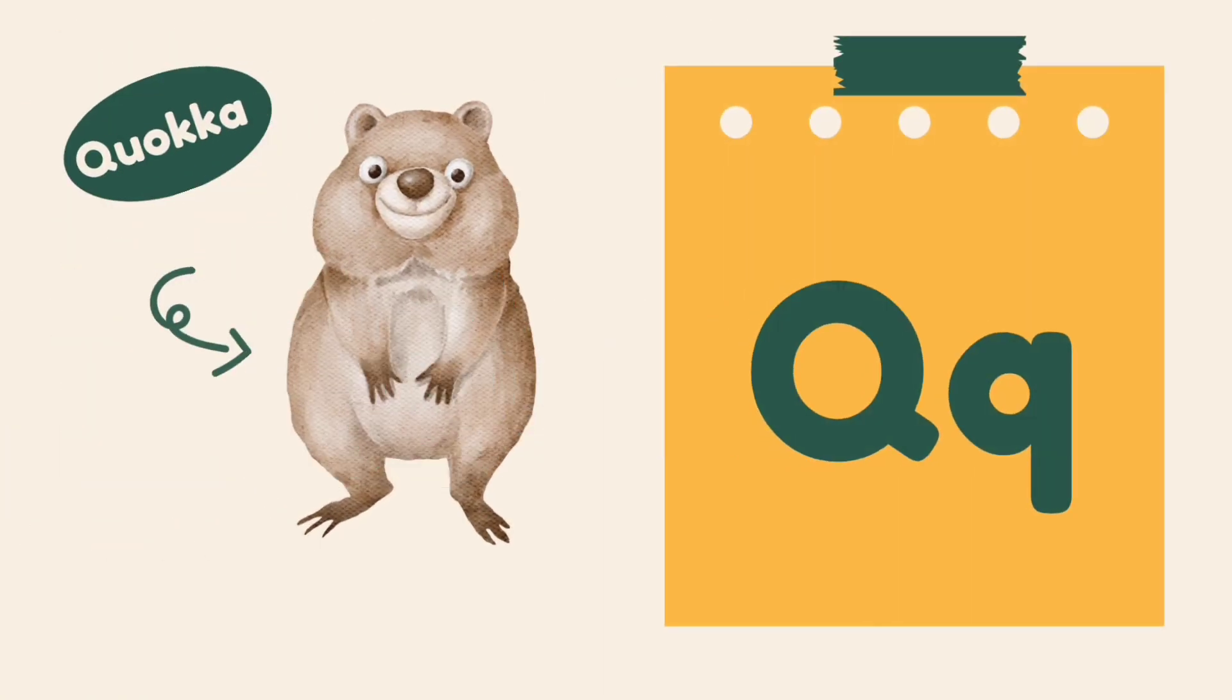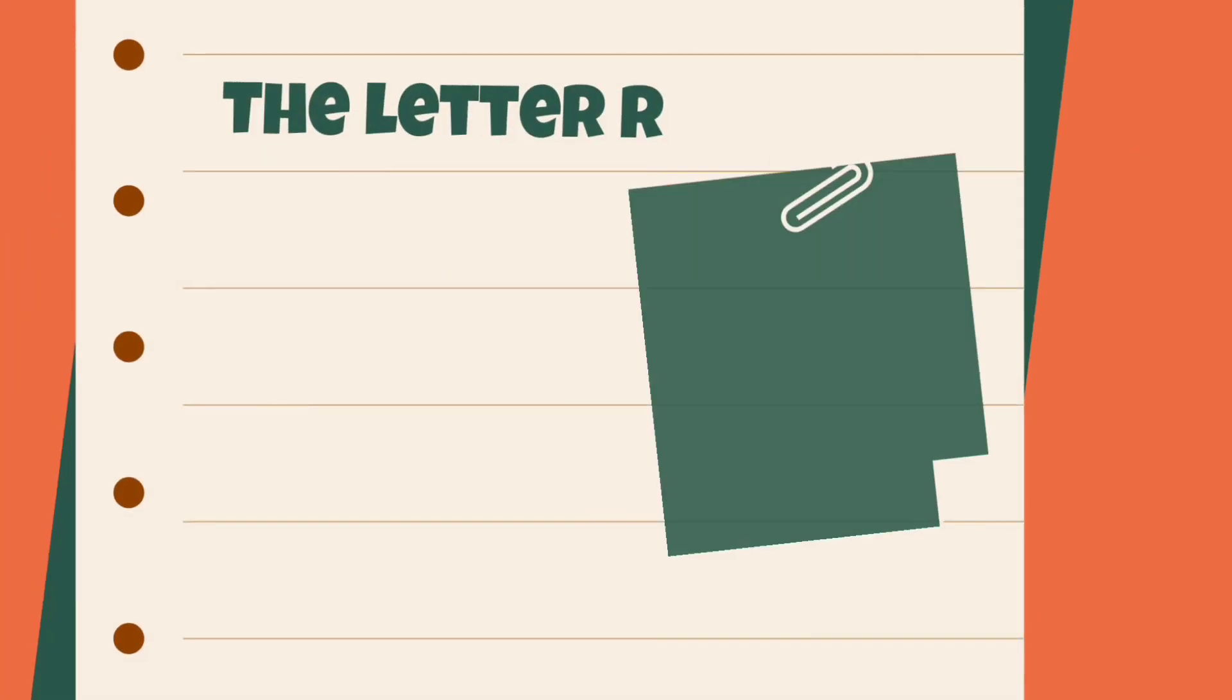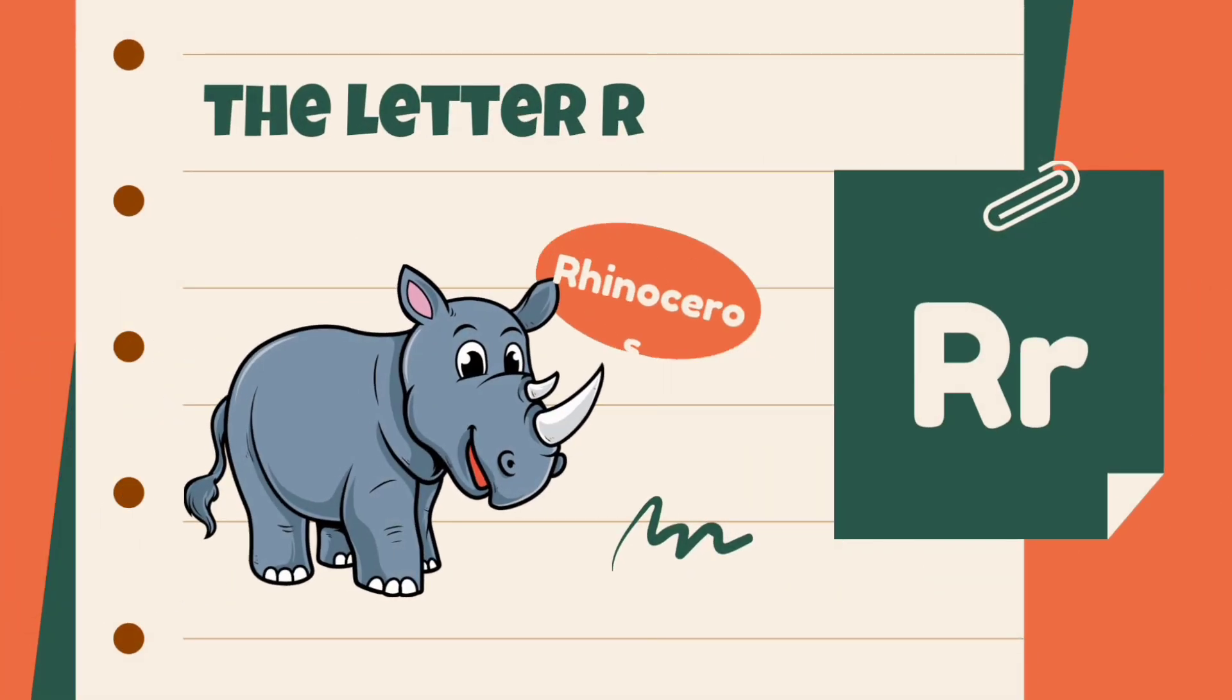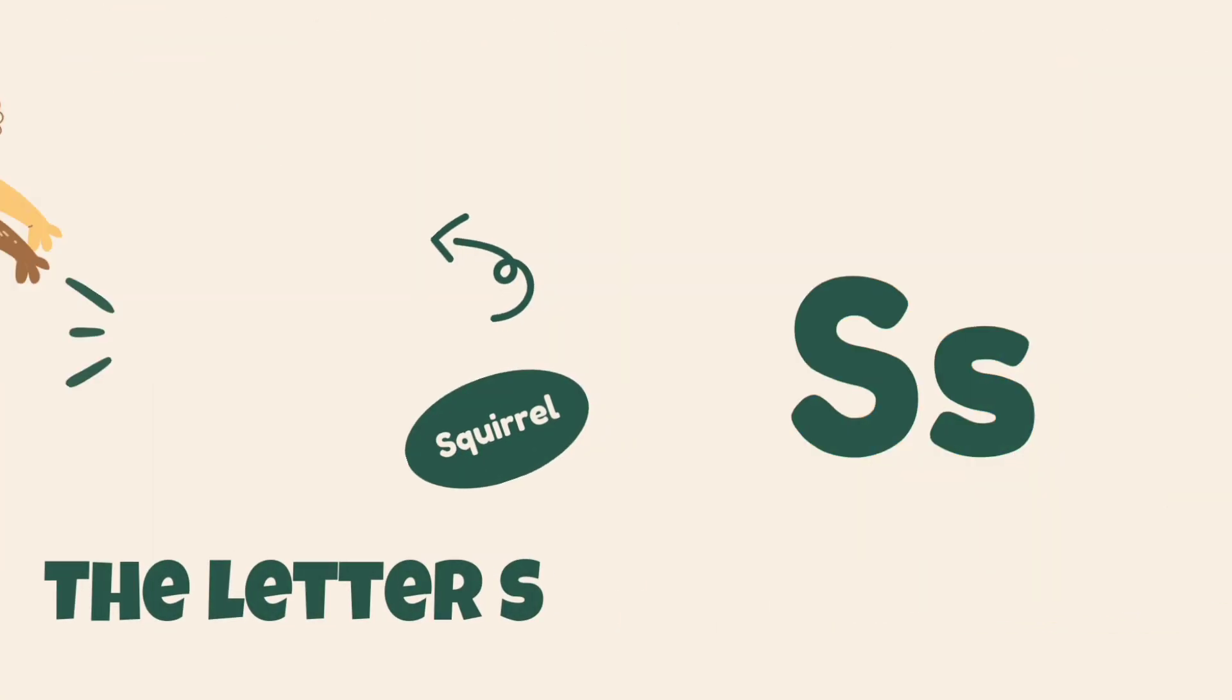Q is for quokka, quokka. R is for rhinoceros, rhinoceros. S is for squirrel, squirrel. T is for tiger, tiger.